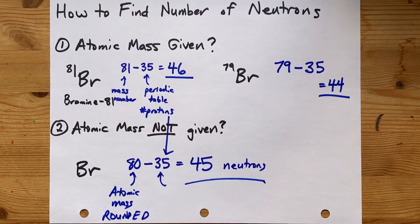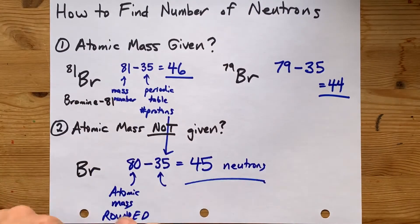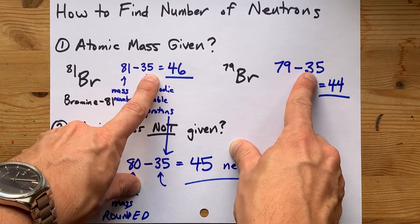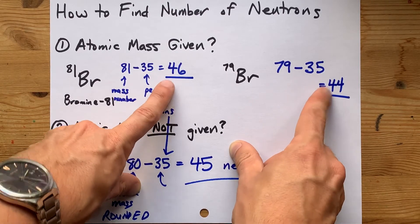So, let's summarize. Number of neutrons is the mass number of the particle minus number of protons, or atomic number. Subtract them to get number of neutrons.